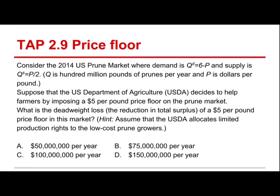Let's get on to that example. I'm building off this same supply and demand for prunes. We're going to say that the U.S. Department of Agriculture wants to help prune farmers, and the $4 a pound price that would prevail in the market isn't enough. We're going to institute a price floor at $5, and ask: what's the deadweight loss? We'll suppose the price floor is implemented by means of a quota where the government restricts production rights so no more prunes than are demanded at $5 a pound can be produced. Peanuts and tobacco are actually regulated this way in the United States.